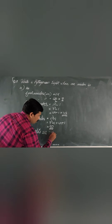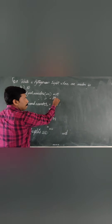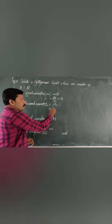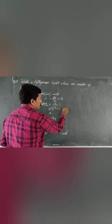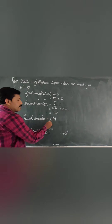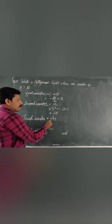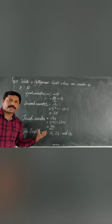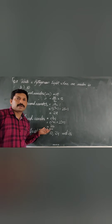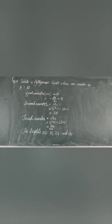We will solve one more example. Question B: first number is 10. So 2n equals 10, therefore n equals 5. The second number equals n squared minus 1, that is 5 squared minus 1, equals 25 minus 1, equals 24. The third number equals n squared plus 1, that is 5 squared plus 1, equals 26. So the triplets are 10, 24, and 26. The remaining questions students will solve on their own.